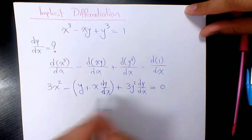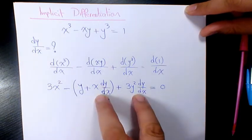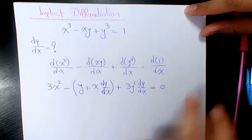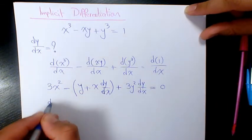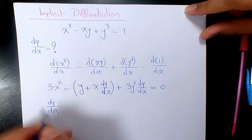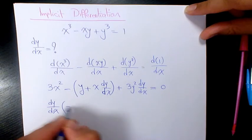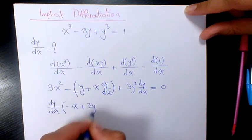So then what you can do, we can keep these two terms here and move these two terms to the other side to simplify it more. So I'm going to have dy/dx (minus x plus 3y²) equals to...